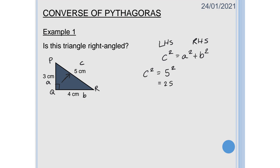And then the right hand side is A squared plus B squared which is going to be 3 squared plus 4 squared which is 9 and 16 which is also 25.